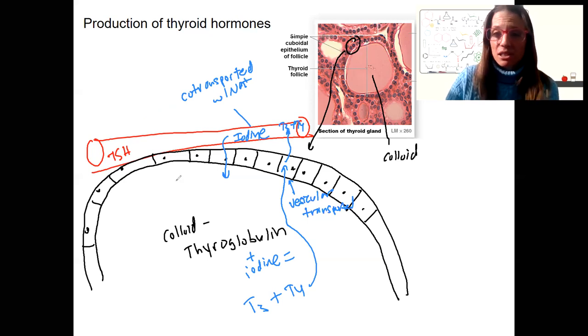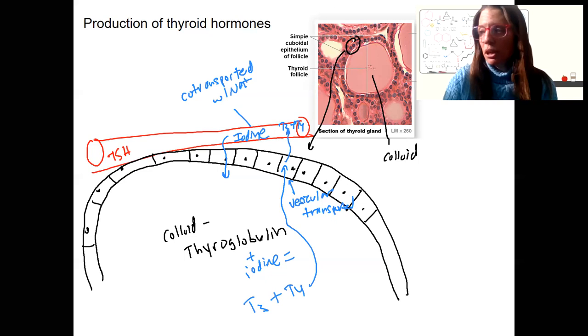TSH is going to basically stimulate all steps in this process. So TSH can cause iodine to be uptaken more quickly. It can cause the chopping of this combination here to happen more quickly. It can cause a production of more thyroglobulin, which is how goiters form, this overproduction, overstimulation of the thyroid gland. So that's how TSH is going to stimulate the production of thyroid hormones. T3 and T4 then go off on the bloodstream and do their thing.